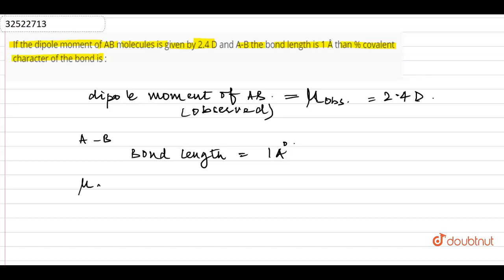So if I calculate it, that would be equal to 4.8 × 10^-10 ESU (electrostatic unit) times 10^-8 centimeters. What is this? Angstrom to centimeters conversion. So this is basically 1 angstrom.